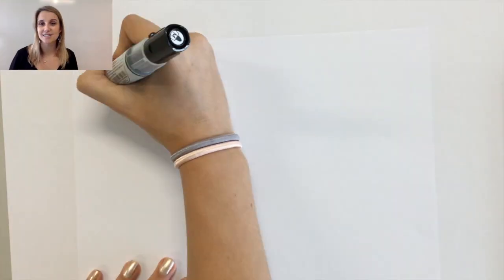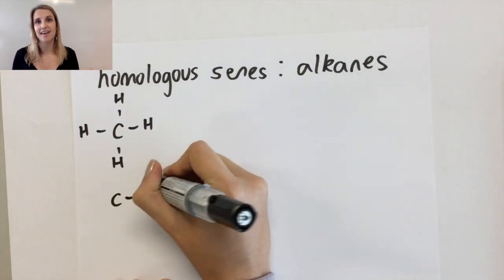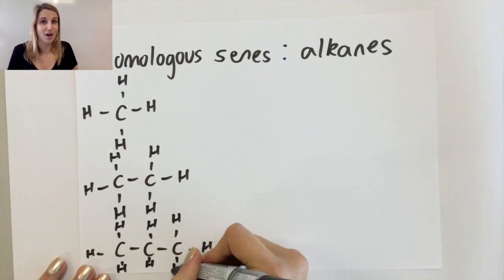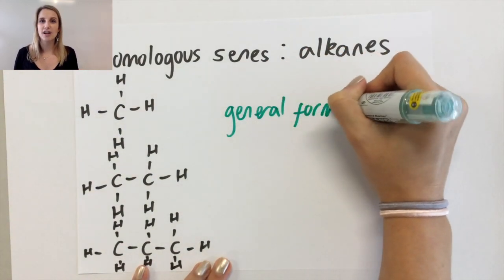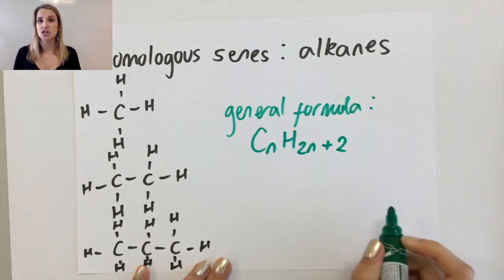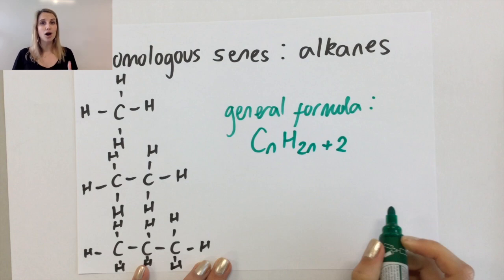The alkanes should look pretty familiar. Here we've got methane, ethane, and propane, but equally I could have drawn an alkane with a hundred carbons in it. The thing they all have in common is the general formula, which we write as CnH2n+2. That means if I had something with a hundred carbons, it would have 202 hydrogens, and that would make an alkane.